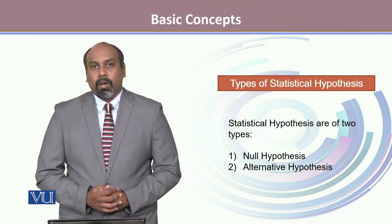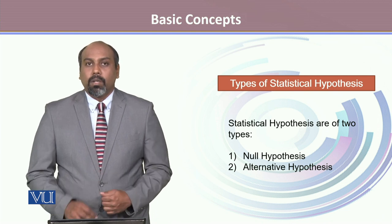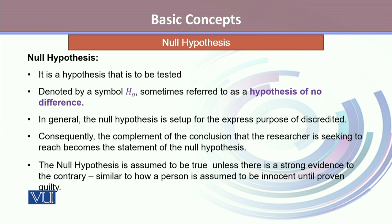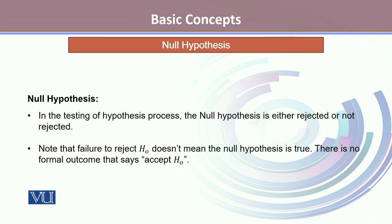There are two types of statistical hypothesis. One is called the null hypothesis, and the other is called the alternative hypothesis. The null hypothesis is the hypothesis that is to be tested. It is denoted by the symbol H0, sometimes referred to as the hypothesis of no difference. In general, the null hypothesis is set up for the express purpose of being discredited. The null hypothesis is assumed to be true unless there is strong evidence to the contrary, similar to how a person is assumed to be innocent until proven guilty. In hypothesis testing, the null hypothesis is either rejected or not rejected. Note that failure to reject H0 does not mean the null hypothesis is true, and there is no formal outcome that says accept H0.